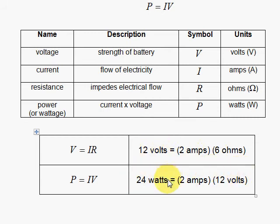24 watts. The question is, what is the wattage, or what is the power, if I draw 2 amps of current and use 12 volts? Well, 2 times 12 gives you 24.